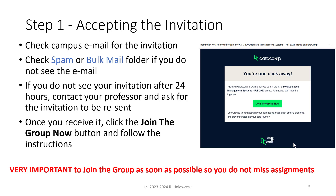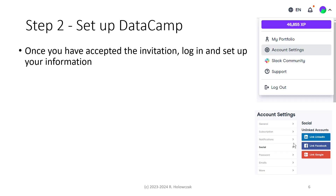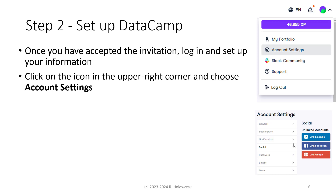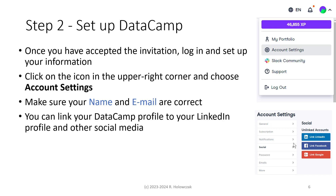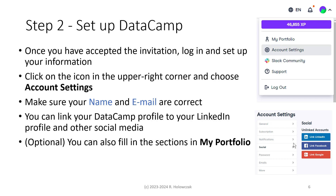If your professor sets up the assignment before you have joined the classroom, you won't see the assignment. The next step is to set up DataCamp. Once you've accepted your invitation, log into DataCamp and set up under Account Settings. Click the icon in the upper right corner and choose Account Settings. Make sure your name and email are correct. You can also link your DataCamp profile to your LinkedIn profile as well as other social media. Optionally, you can fill in the sections under My Portfolio where you can tell people a little bit more about yourself.